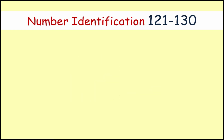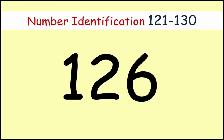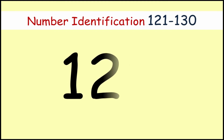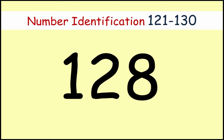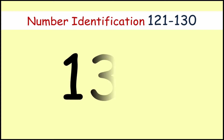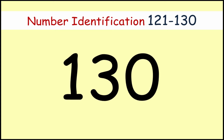One two five — one hundred and twenty-five. One two six — one hundred and twenty-six. One two seven — one hundred and twenty-seven. One two eight — one hundred and twenty-eight. One two nine — one hundred and twenty-nine. One three zero — one hundred and thirty. Good job, friends!